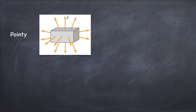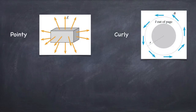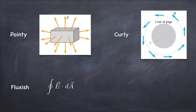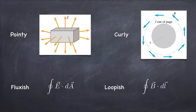Let's talk about pointy fields and curly fields. Pointy fields have a mathematical characteristic which is that they have a flux through a closed surface — we could call that fluxish. An integral that goes around a loop measures a characteristic we could call loopish. So you measure the loopishness, which tells you if the field is curly, and you measure the fluxishness, which tells you whether the field is pointy.